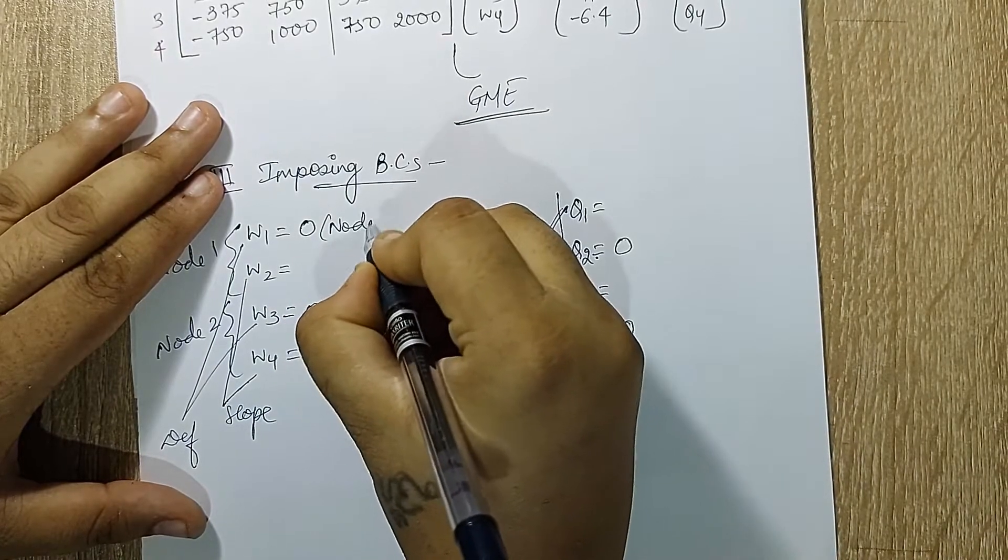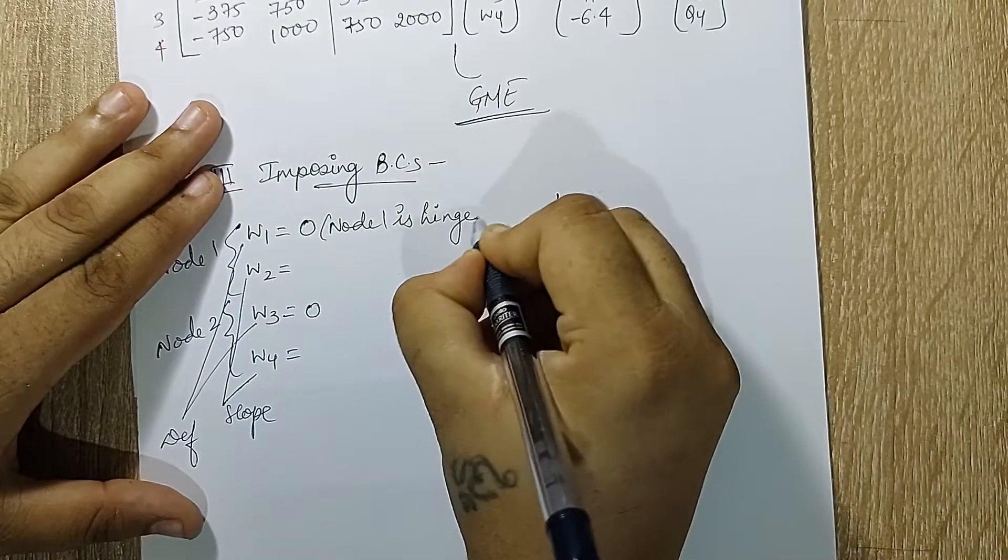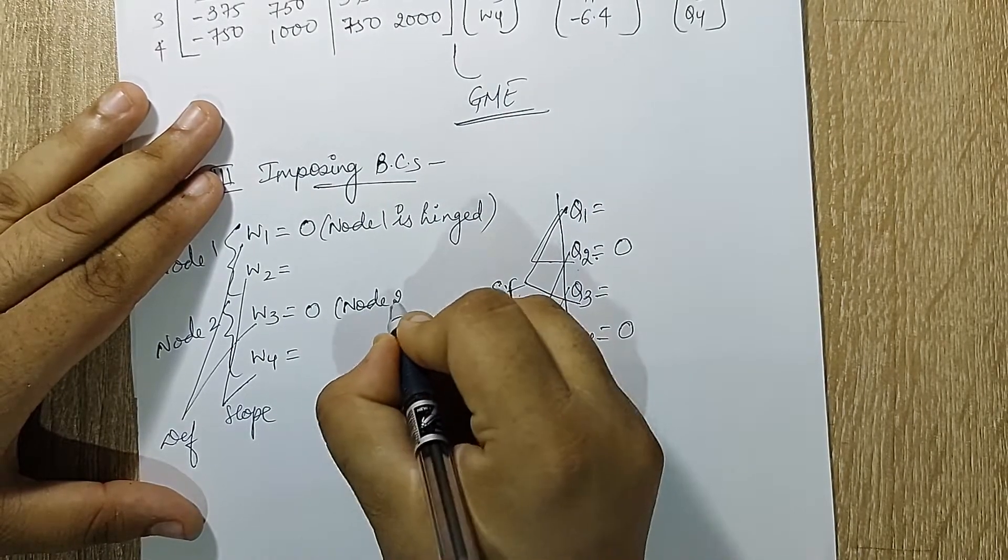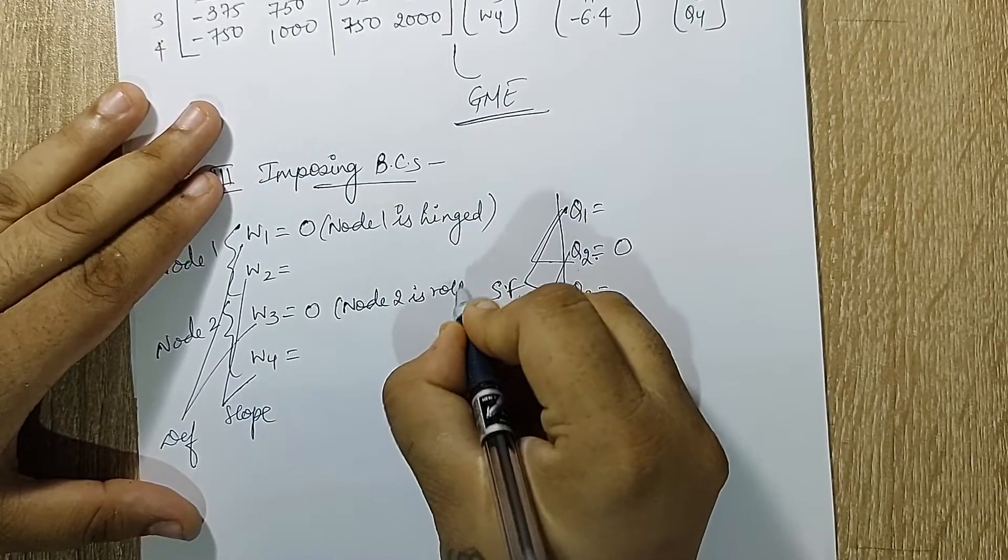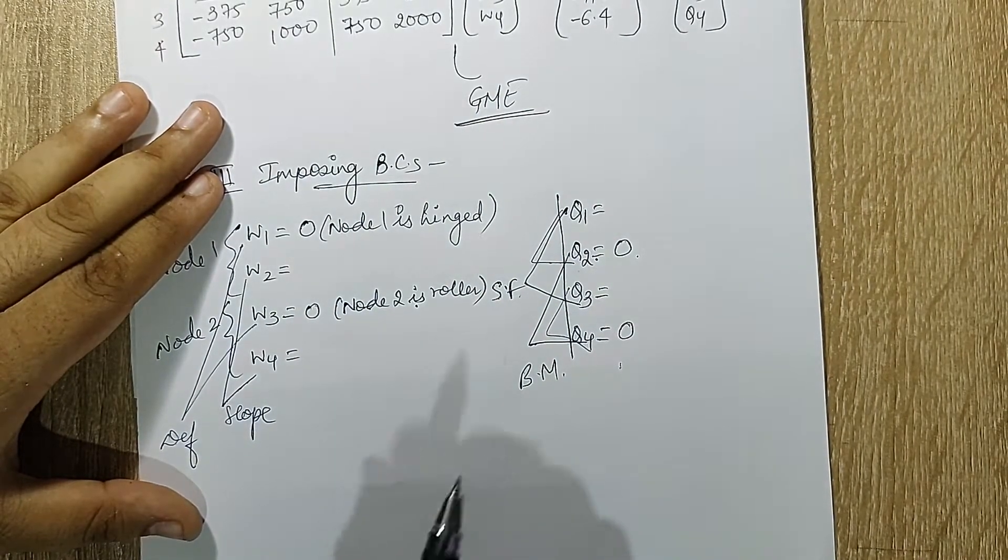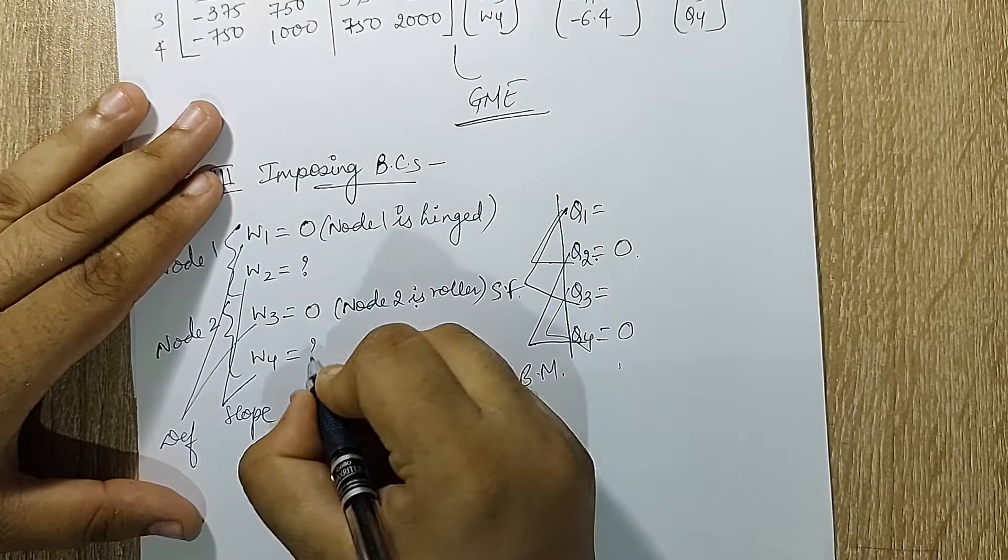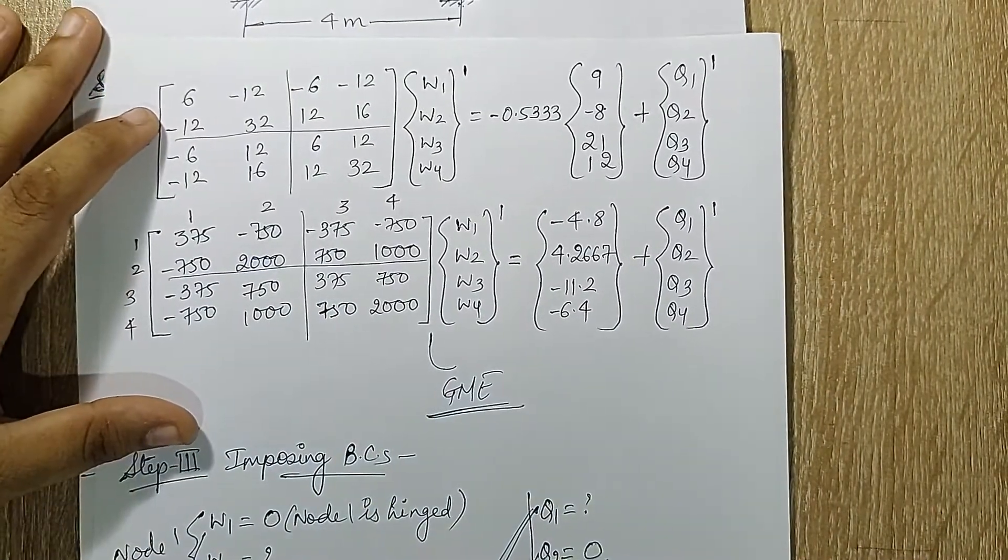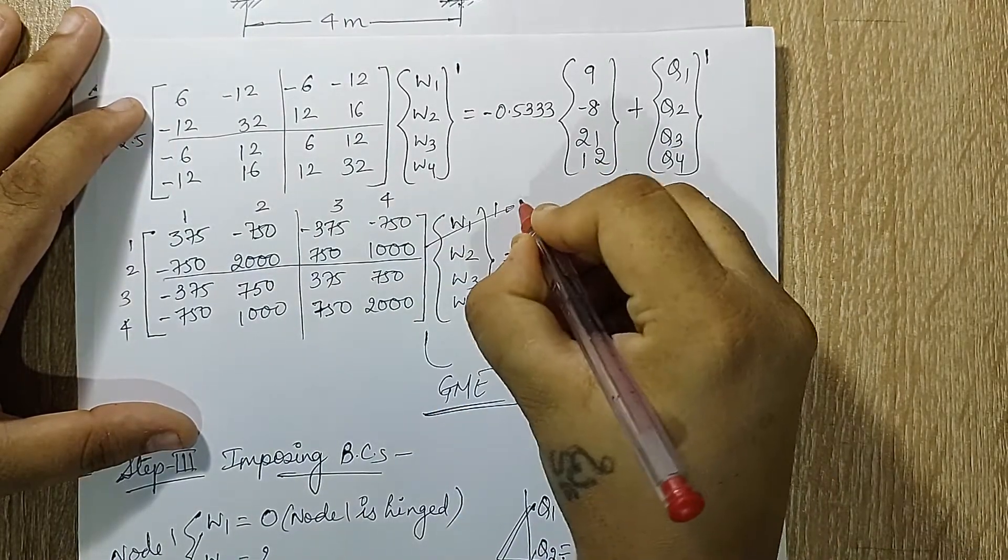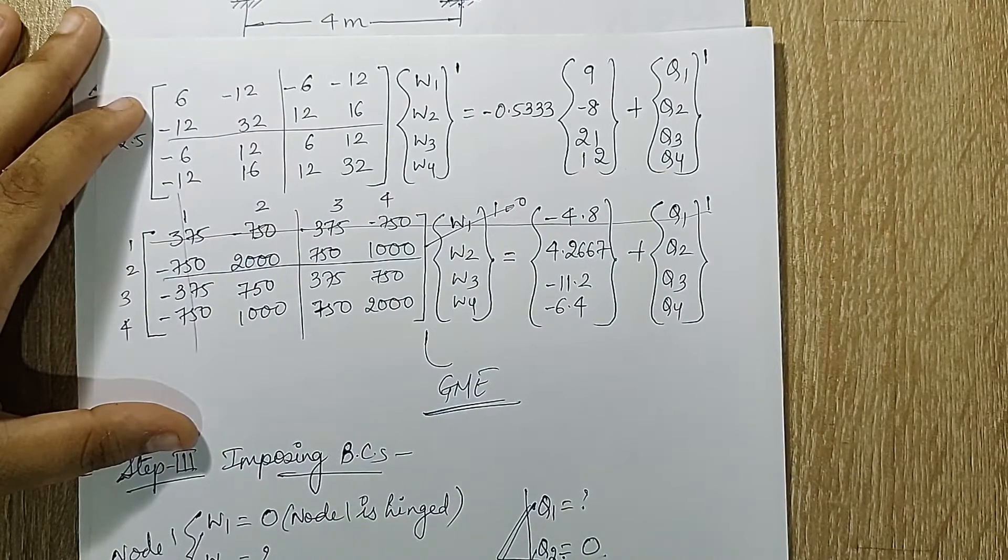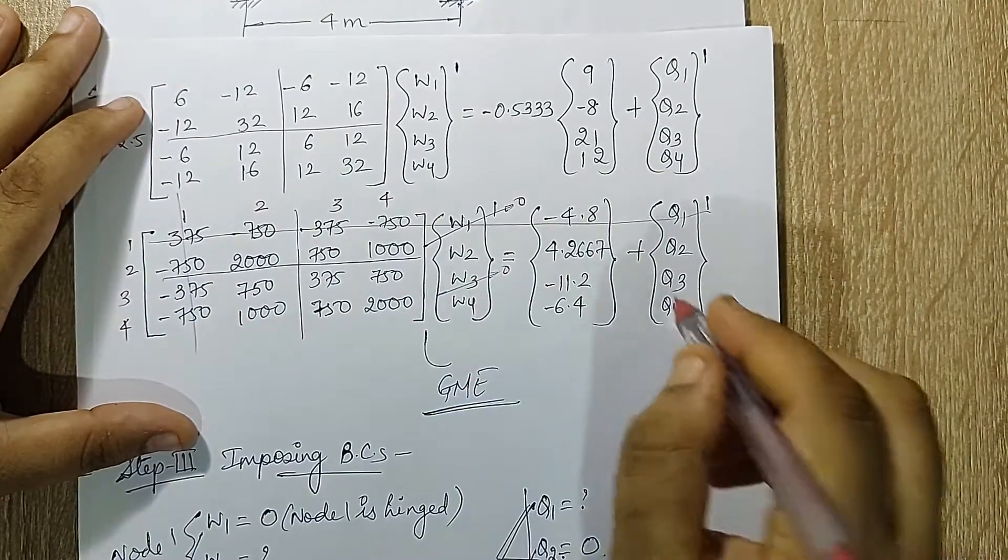I'll write here node 1 is hinged, and here I'll write down node 2 is a roller. So that is why these two are 0 over here. Now whatever remains is going to be question mark. Now let's substitute over here. I have w1 as 0. Since this is 0, my first row first column can be ignored for some time. w3 is 0, so I'll ignore my third row and third column for some time.